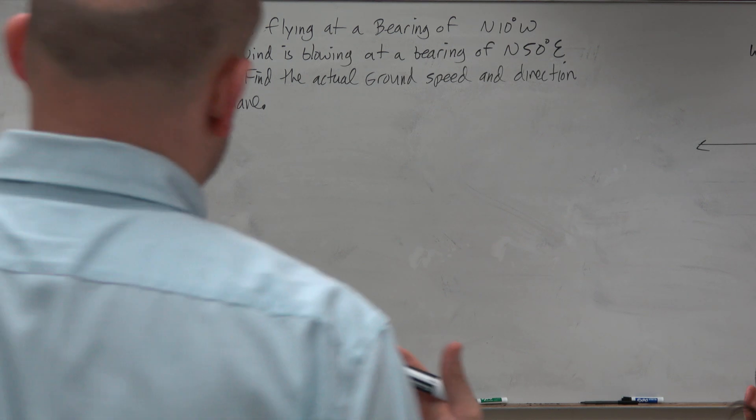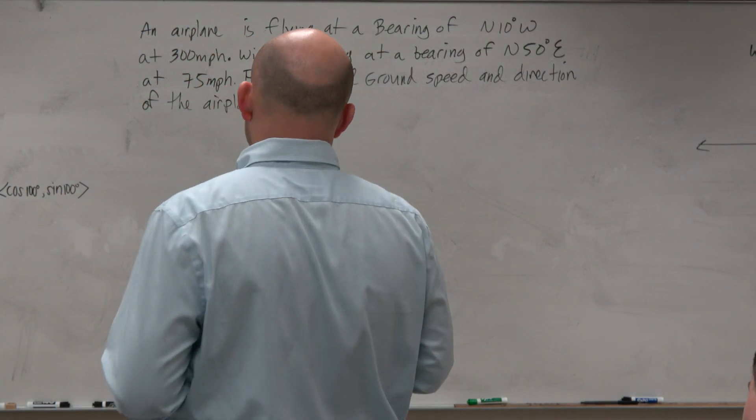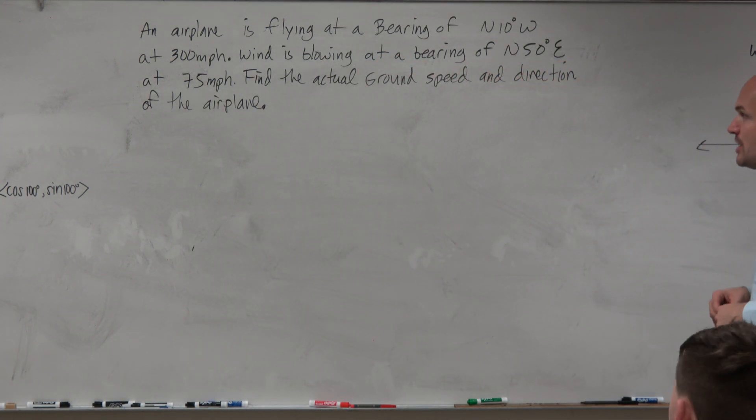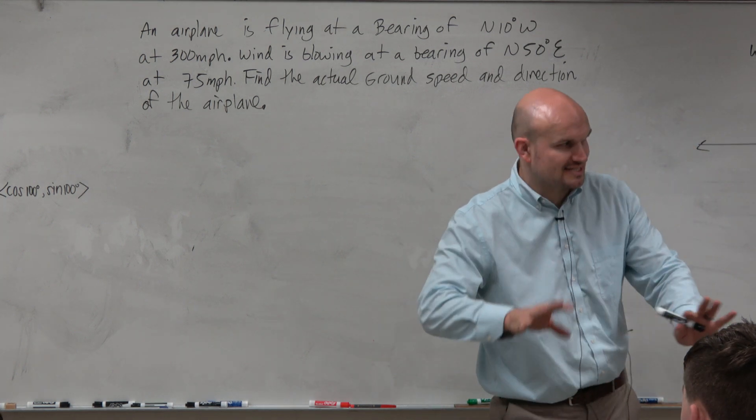So it says an airplane is flying at a bearing of north 10 degrees west at 300 miles per hour. Wind is blowing at a bearing of north 50 degrees east at 75 miles per hour. Find the actual ground speed and direction of the airplane.